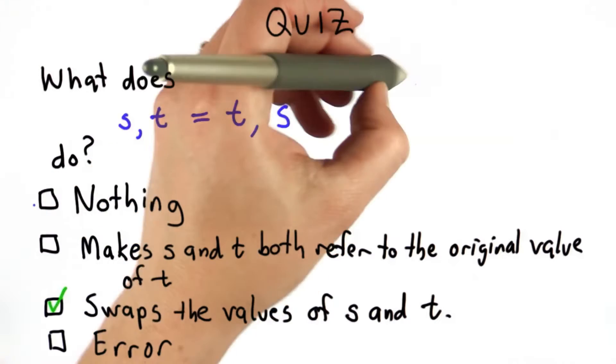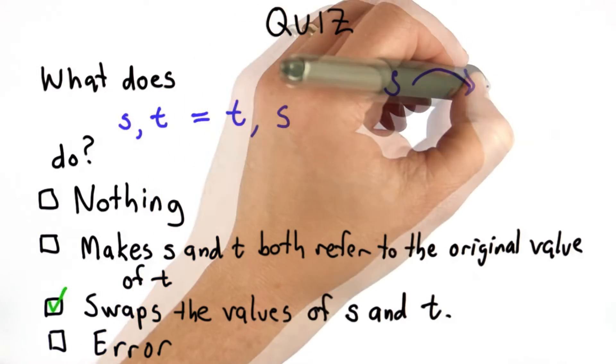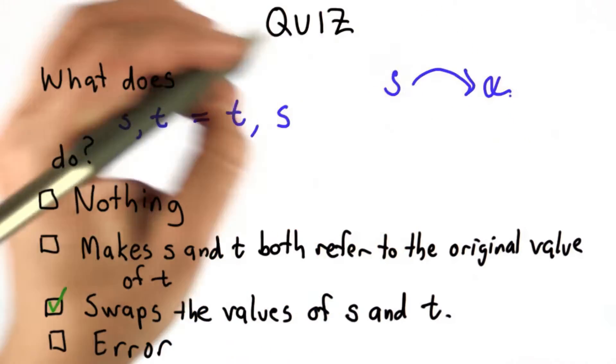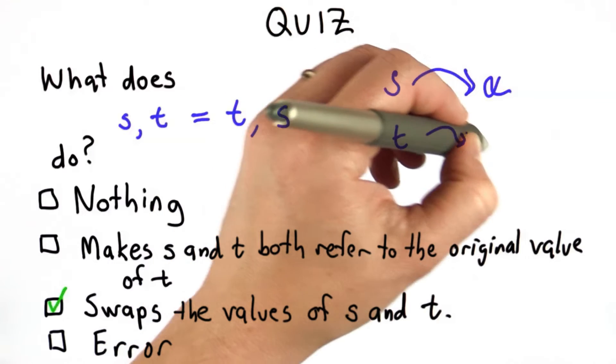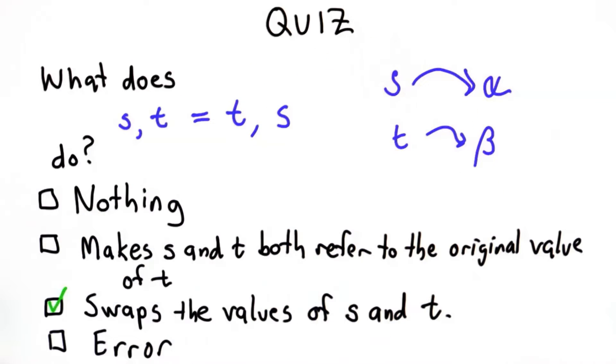So what's going on? S refers to some value. Let's call that alpha. And T refers to some value. We'll call that beta. This is before the assignments.